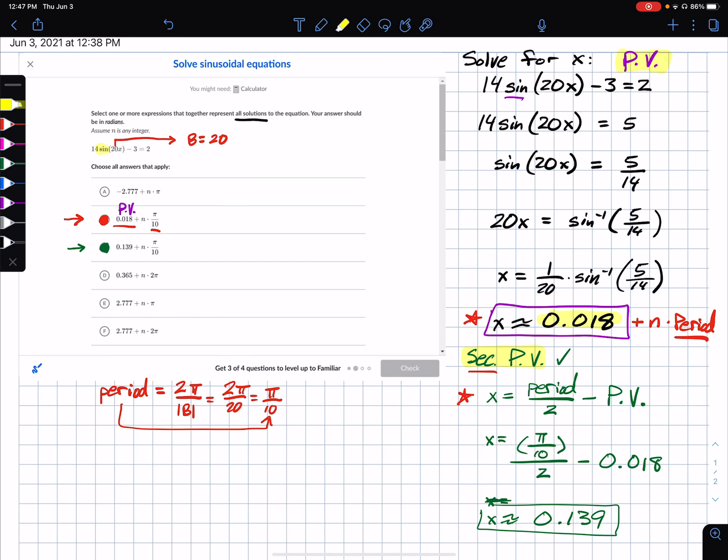But by using this little formula here, period divided by 2 minus the principal value, we can get this other starting point, which I call the secondary principal value. So that narrows it down to those two spots, and those are both verifiably using the skip counter of n times π tenths.